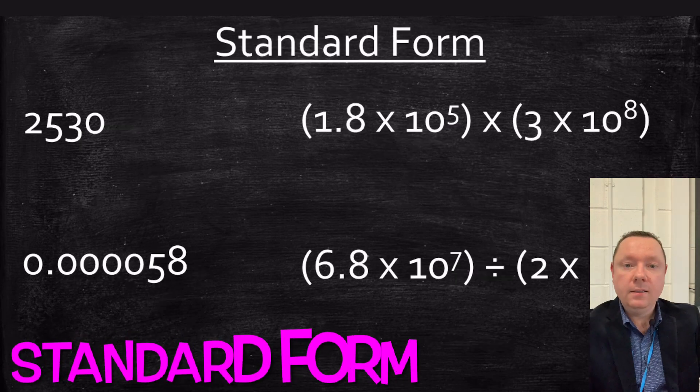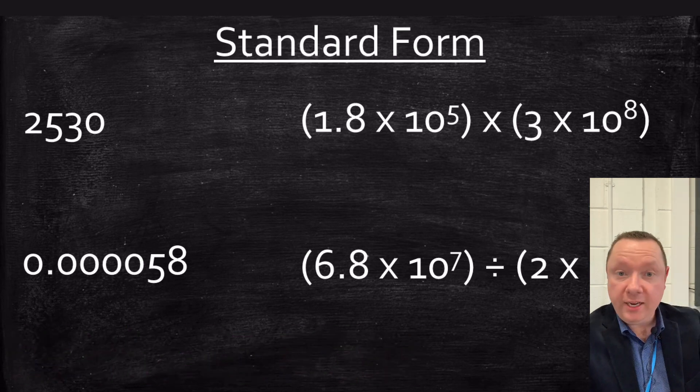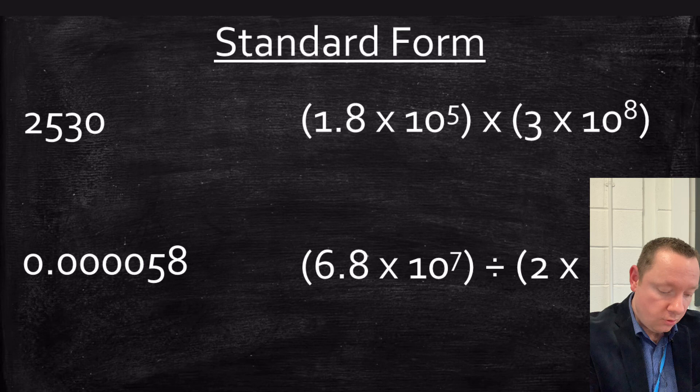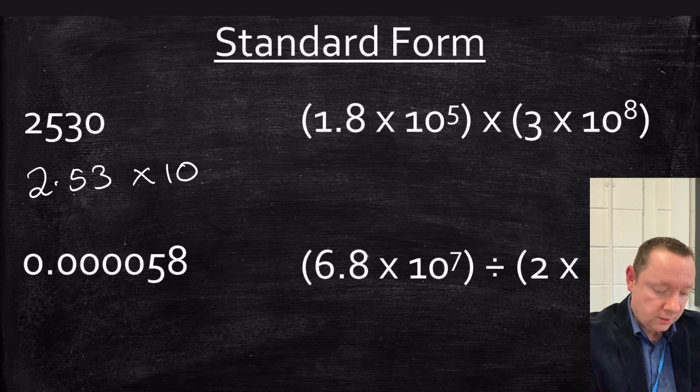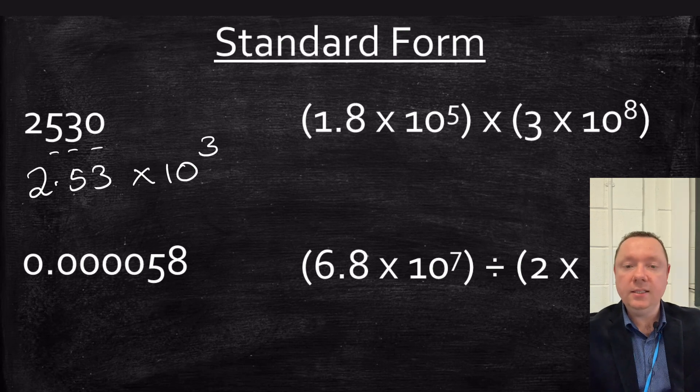Okay, standard form or scientific notation. Let's go big number first, 2,530. So the first thing you always write down is a number between one and ten using the numbers I've got, so it's 2.53, always times 10, then a power. To get the power with this, you just count the number of numbers after the first one, so in other words, one, two, three, to the power of three.